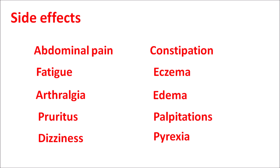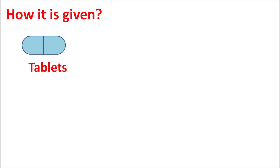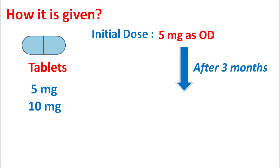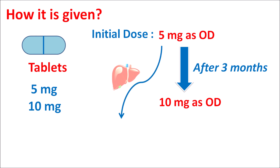Obeticholic acid is available as tablets at strengths of 5 mg and 10 mg. The initial dose is 5 mg once daily. After three months of treatment, the dose can be increased to 10 mg once daily. However, in patients with hepatic dysfunction, the dose should be reduced — instead of once daily, obeticholic acid can be given at 5 mg once weekly.